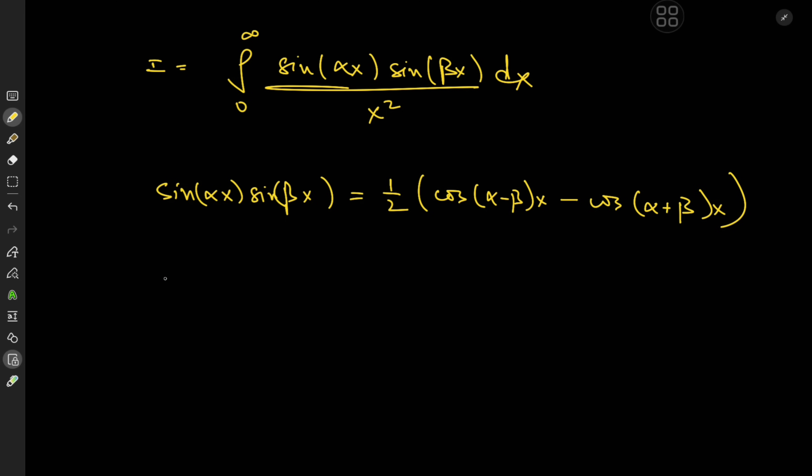So that means i here is in fact the integral from zero to infinity of this factor of one half outside and we have cosine of alpha minus beta x minus cosine of alpha plus beta x over x squared dx.